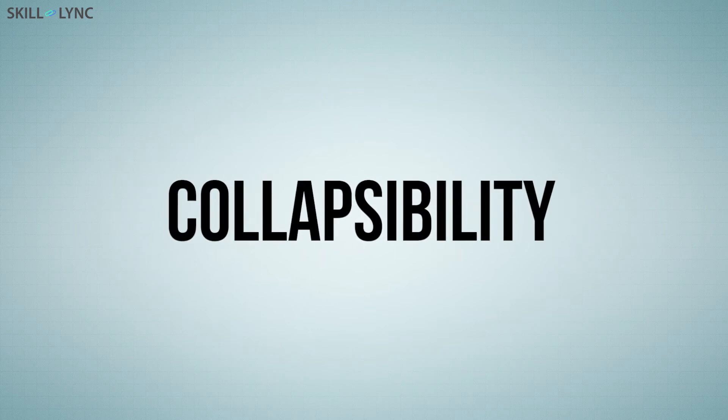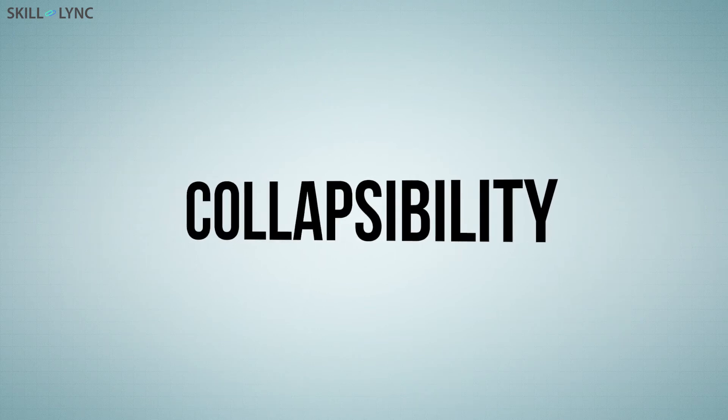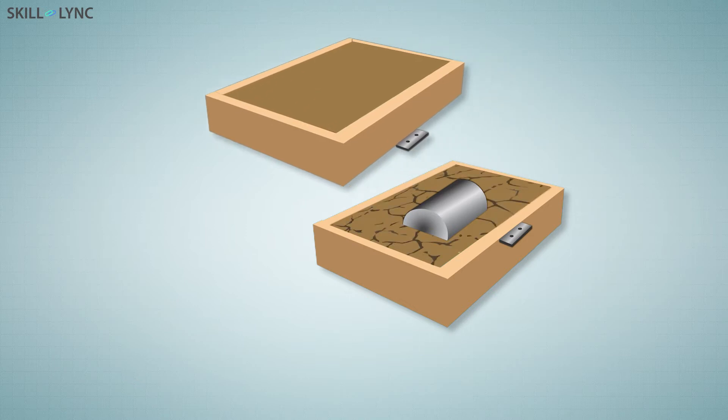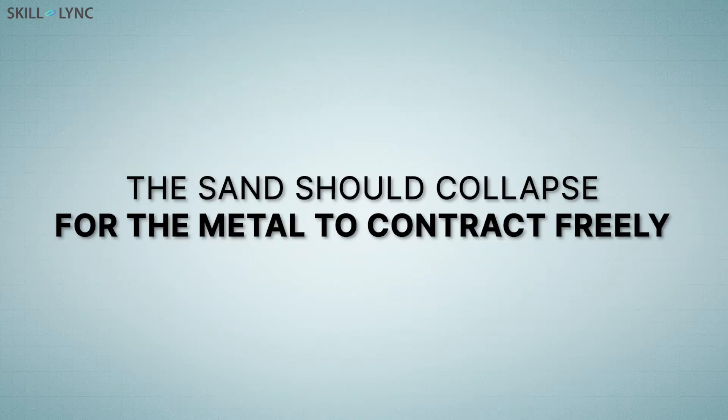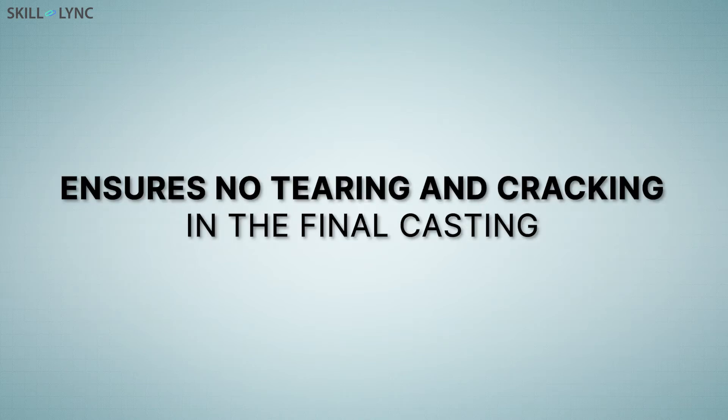The next property of molding sand that we will talk about is collapsibility. It is a property by which the molding sand collapses after the solidification of molten metal. For the metal to contract freely upon solidification, the sand should collapse. This will ensure that the contracting material or final casting is free from tearing and cracking.